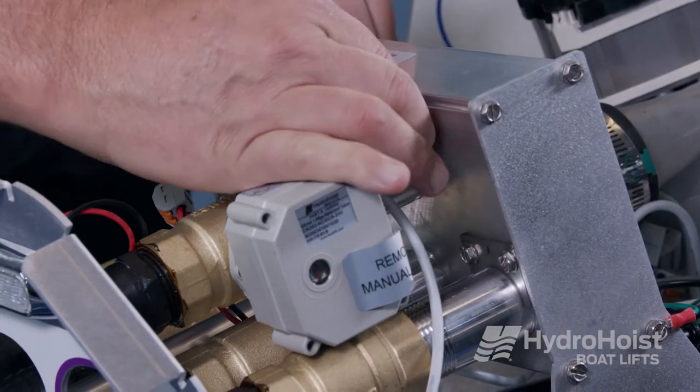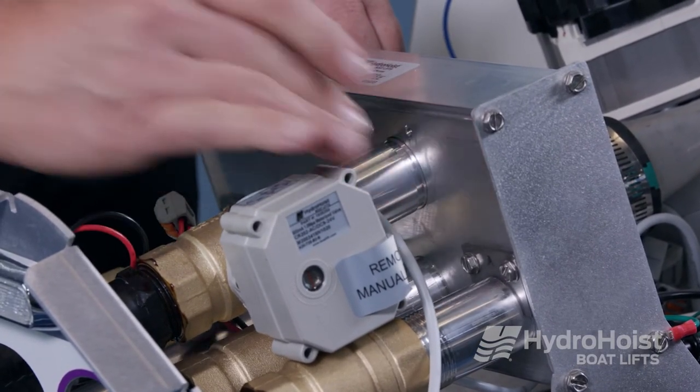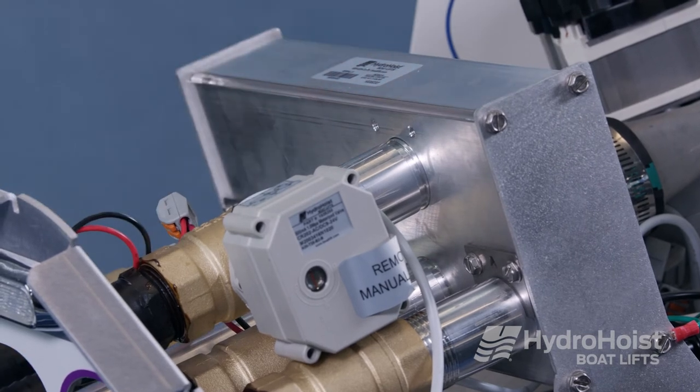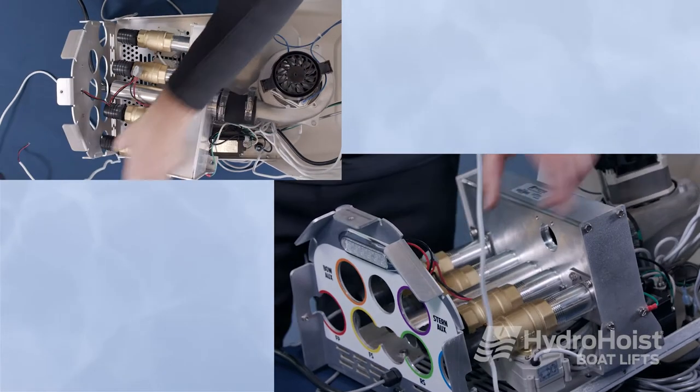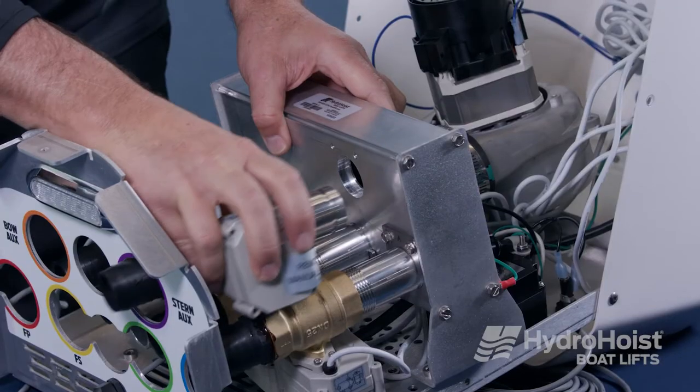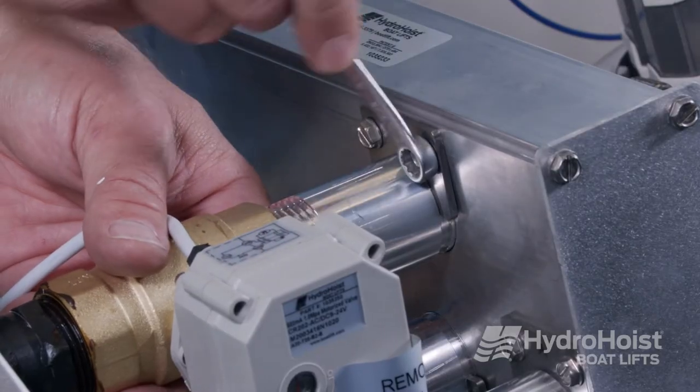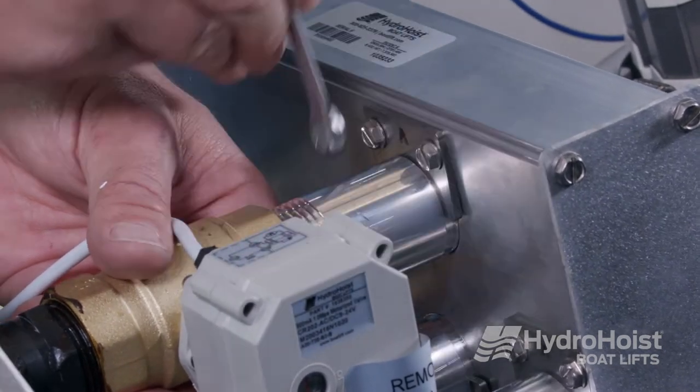Remove the valve retainer clip by loosening the bolts. The valve should now be able to be pulled out of the manifold. Replace the new valve in its proper orientation and secure the retainer clip with its two bolts.